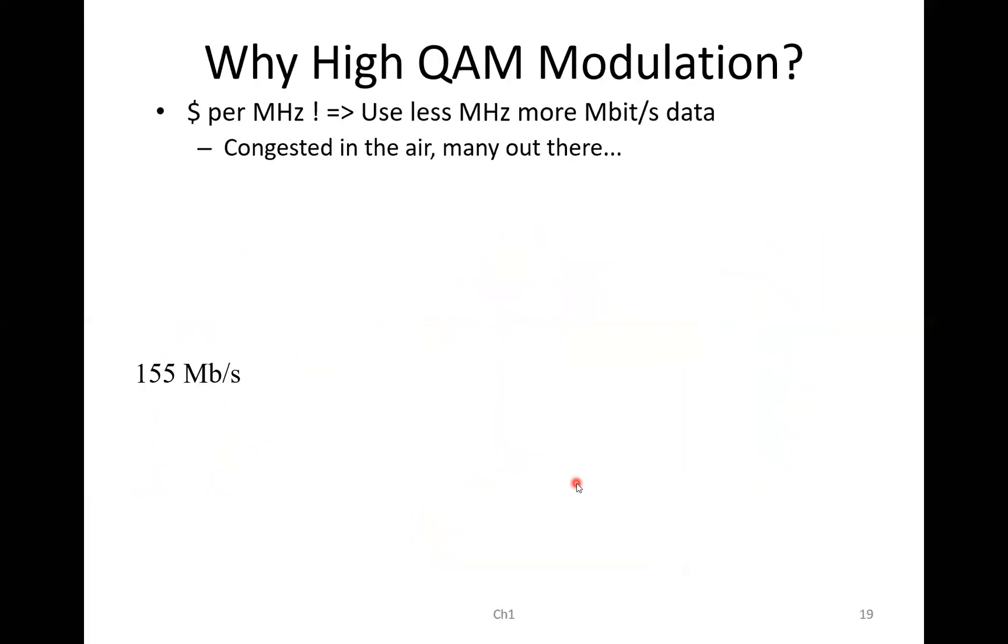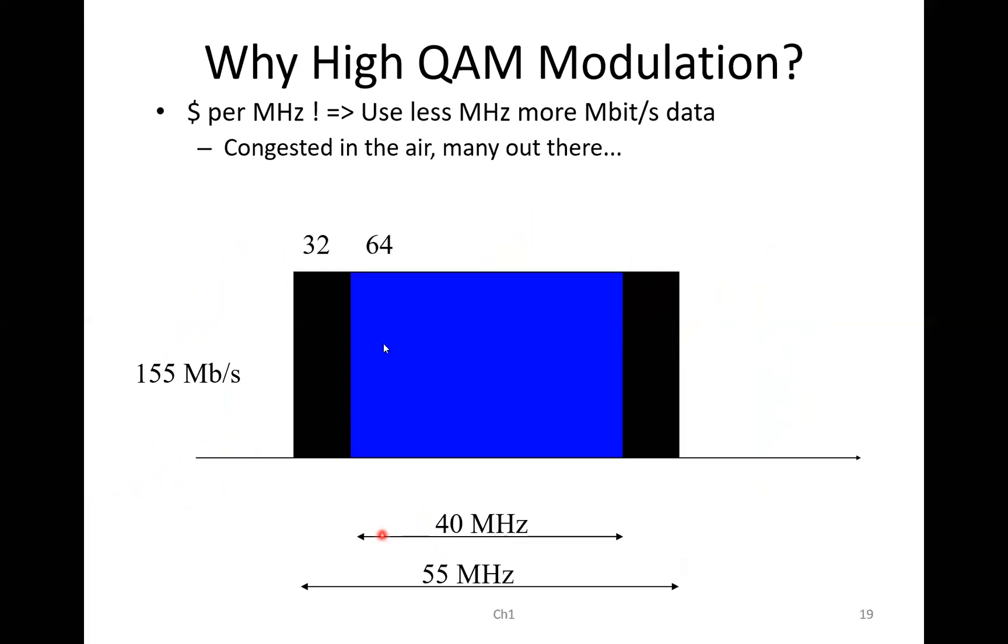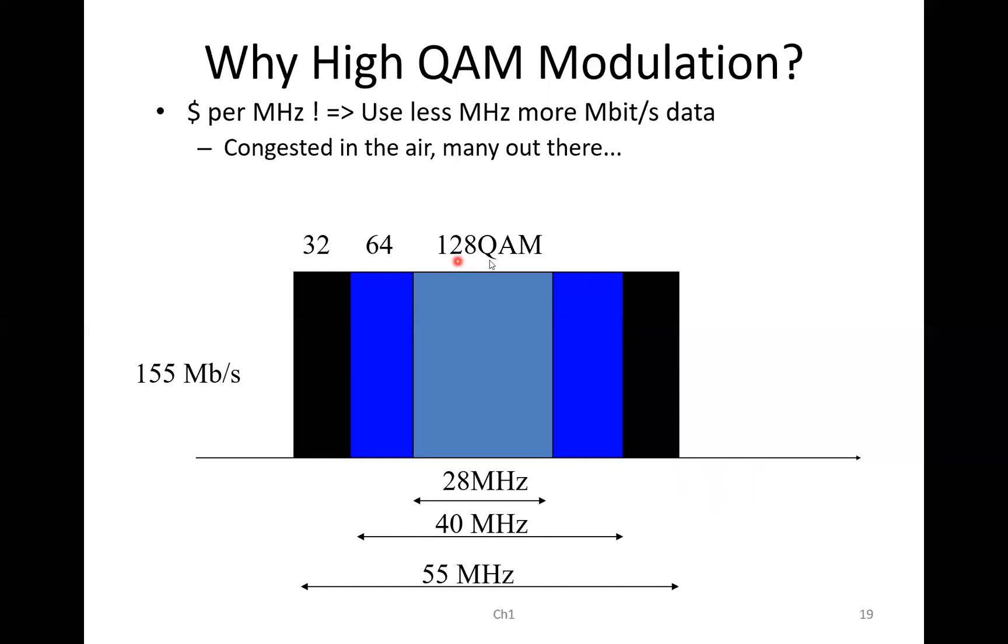So why do we use high QAM modulation? Well, we save frequencies. In 32 QAM, we are using 55 megahertz. With 64 QAM, we are using 40 megahertz. And with 128 QAM, we are using 28 megahertz.